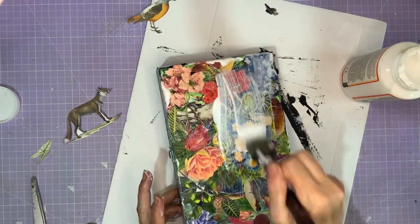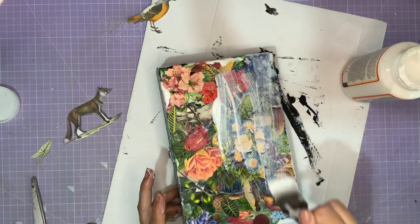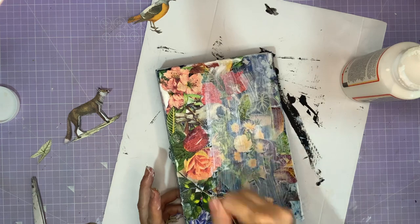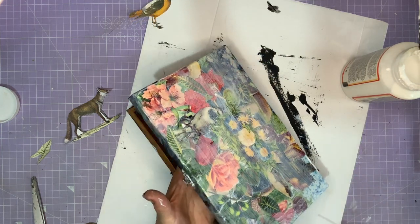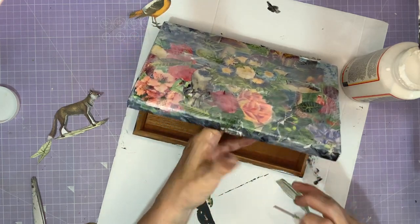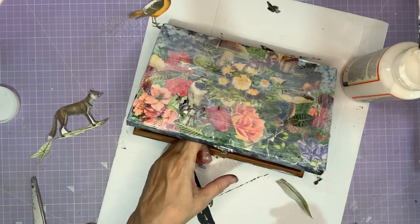Don't worry about making a bit of a mess with the Mod Podge because you will be putting a final layer over everything. One final coat right over the top of everything, on the top too, so you know that everything's glued down firmly. And then I really recommend you open the box because if you don't, you'll find you've glued it shut.